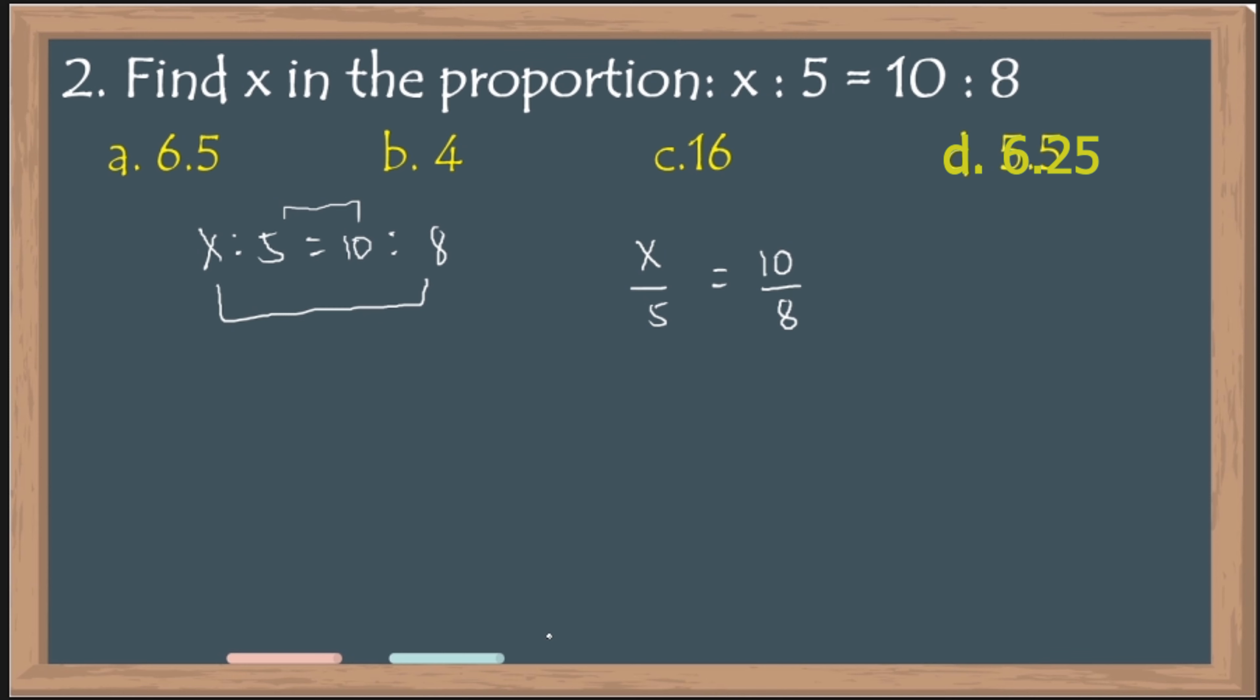You can now cross multiply. Ako kasi mas gusto ko yung ganito, so magko-cross multiply ako. That is 8 times x, 8x. Then, 5 times 10. That is 50. Then, to find the value of x, divide natin sya kung anong numerical coefficient ng x, which is 8. So, cancel out na yan. 50 divided by 8. That is 6.25.